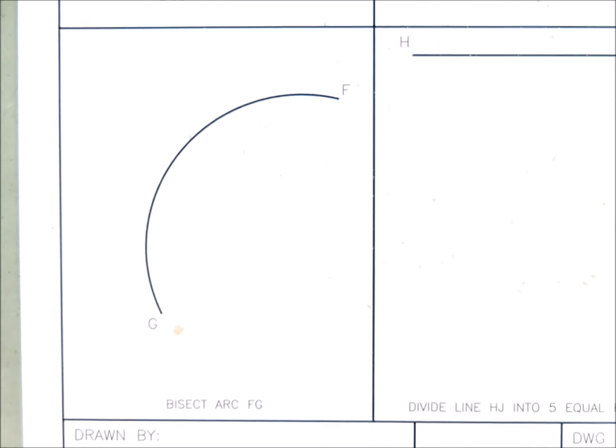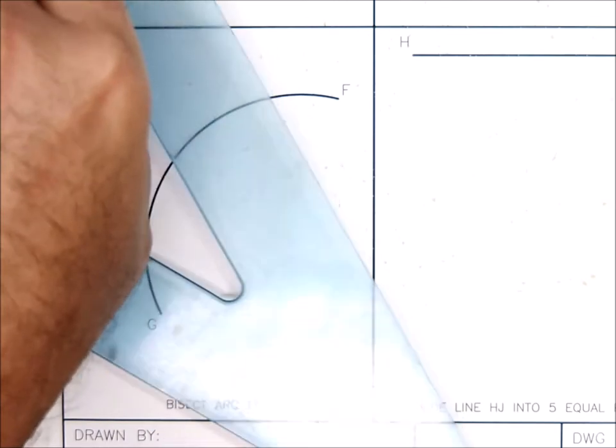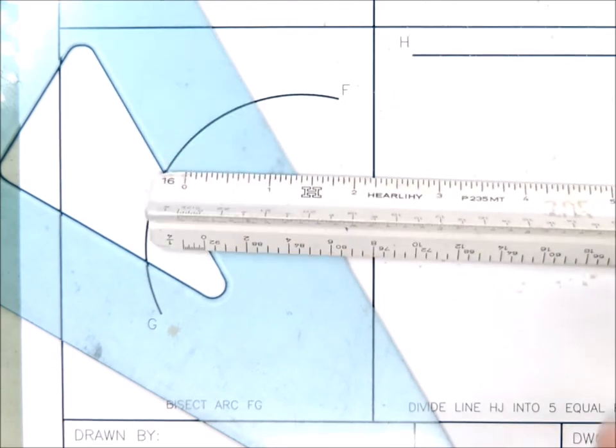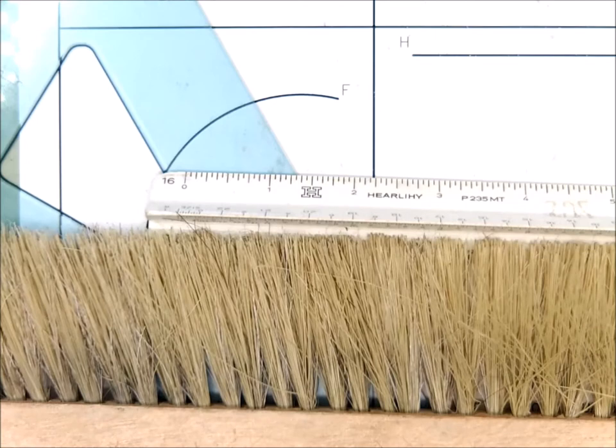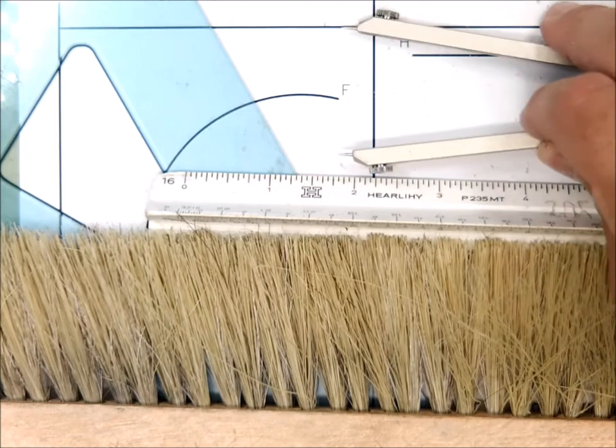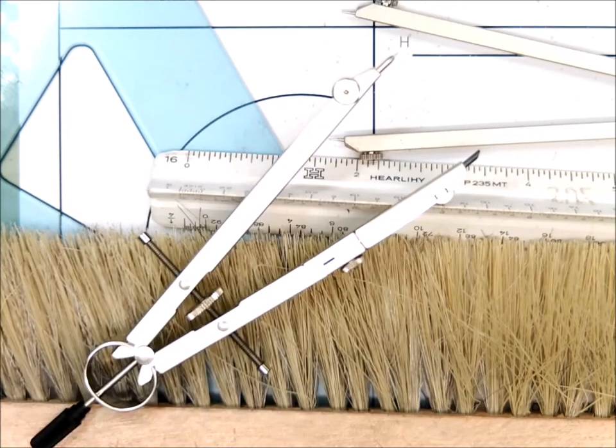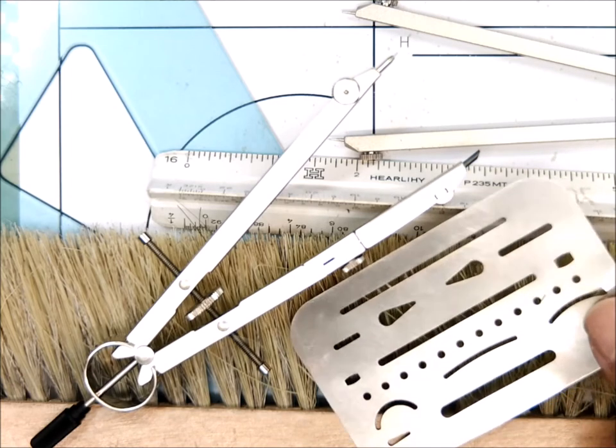Let's talk about the tools we'll need to make our geometric constructions. You're going to need a triangle. Either one should do. You are going to need a scale. You'll need your dusting brush. You're going to want to get your dividers. You're going to need a compass, and then an erasing shield.